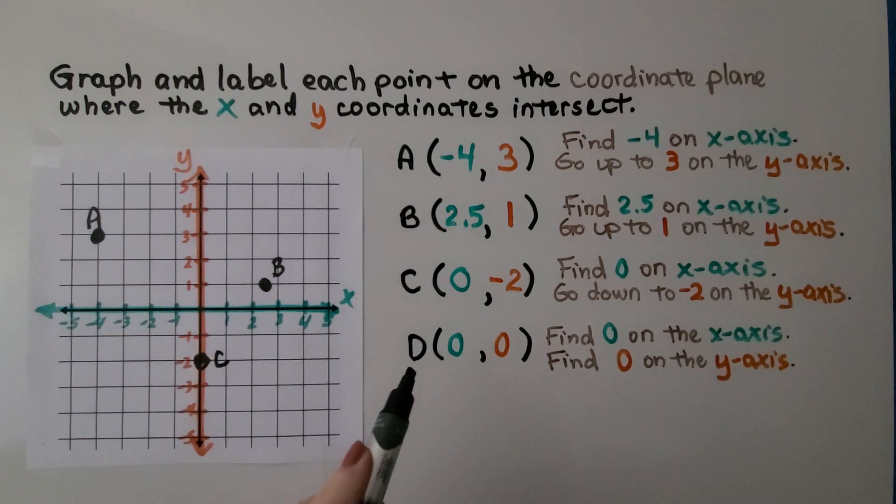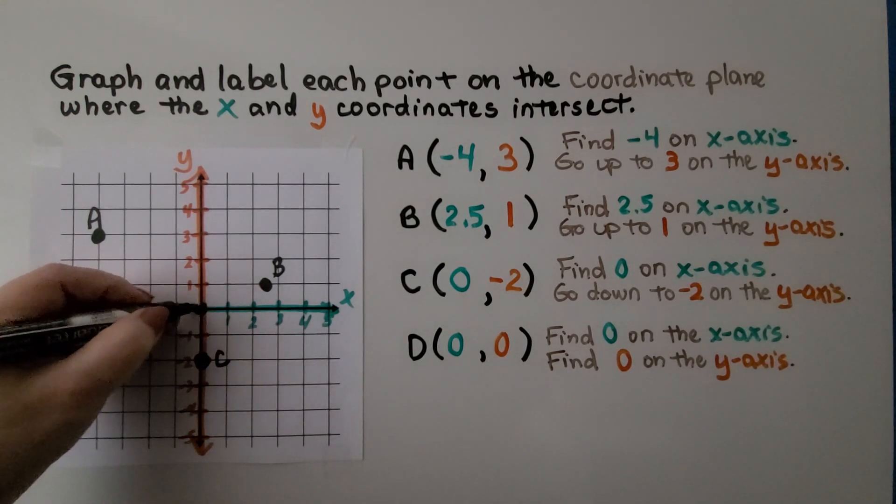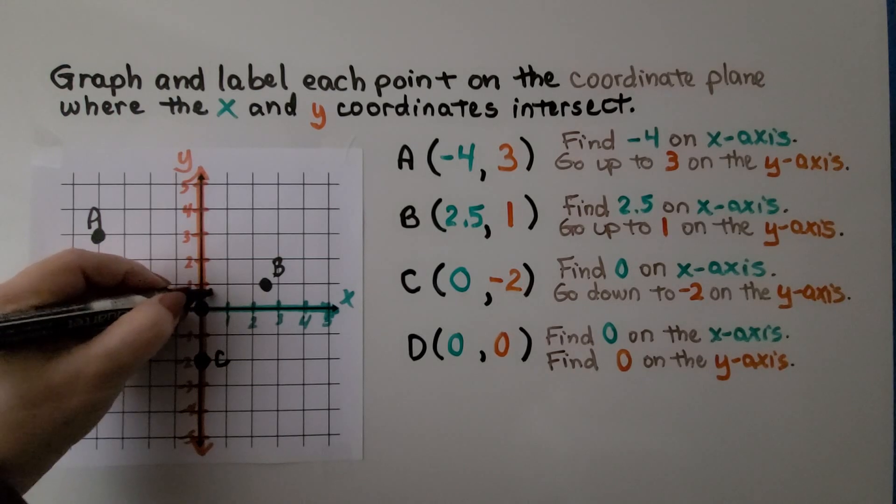And then it's telling us that point D is at zero, zero. Well, that's the origin. That is right here. We can label that D.